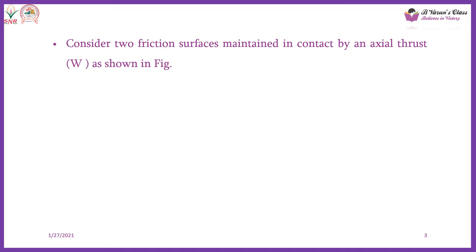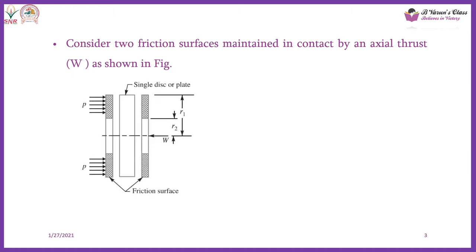So what are all the important parameters in clutch design? Since it finds application in automobiles, it is necessary to understand the various forces acting on the clutch plate and the various design aspects to be considered. For design purposes, let us consider a single plate clutch which has two frictional surfaces with uniform pressure P and with an axial thrust of W.